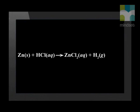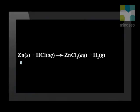When zinc reacts with hydrochloric acid, we know it forms hydrogen and a salt. In this case, the salt is zinc chloride. Now, let's look at the charges of these atoms and ions. Since zinc is an element on its own, it has a zero charge. A hydrogen ion has a charge of plus one, while a chloride ion has a charge of negative one.